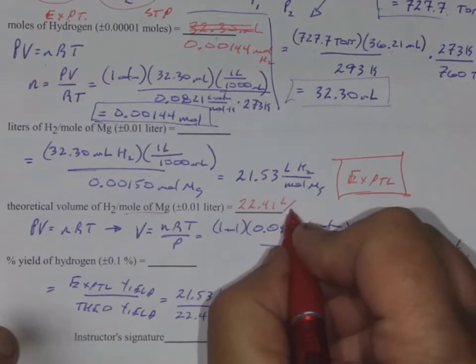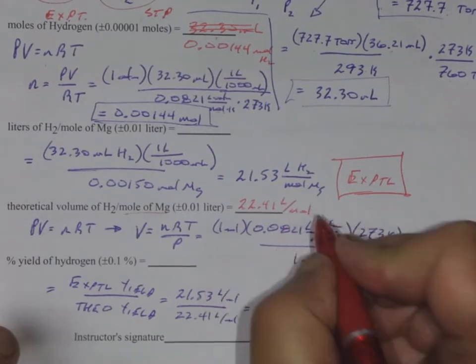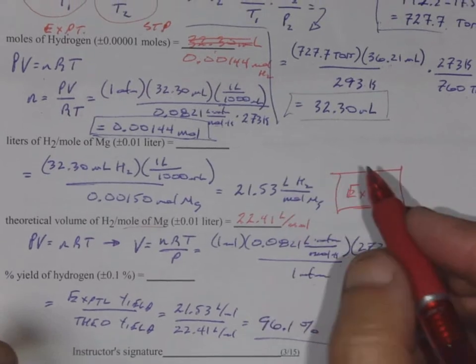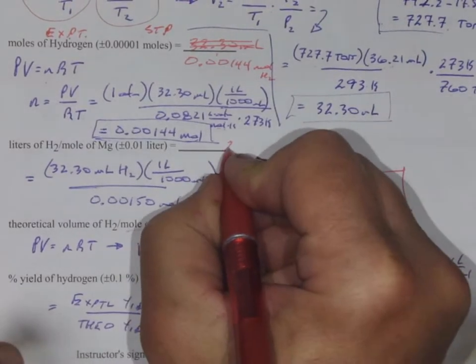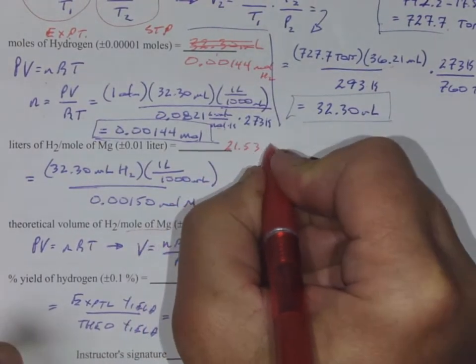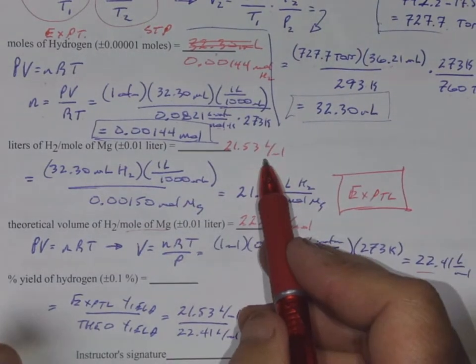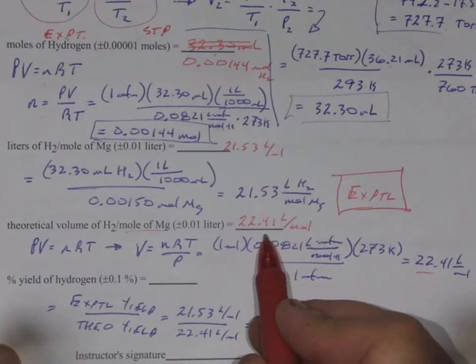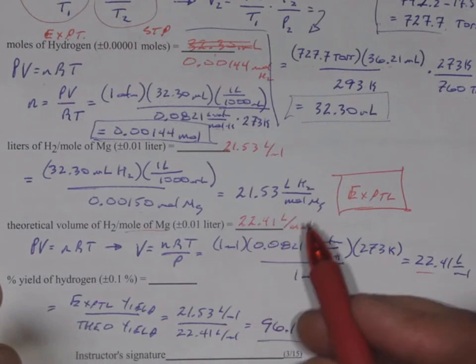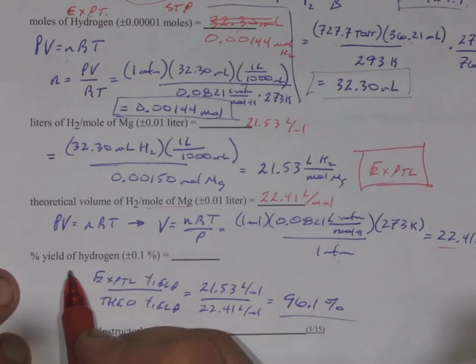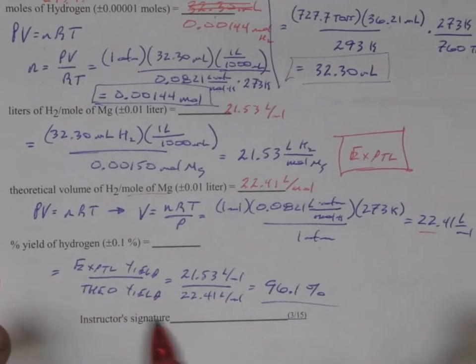If you go on to take 111, you'll look at this a little harder, but for us, that's what one liter of gas at STP occupies. So we see that those were close, 21.53. We had 21.53 experimentally. We calculated a theoretical at 22.41, not dead on, but fairly close.